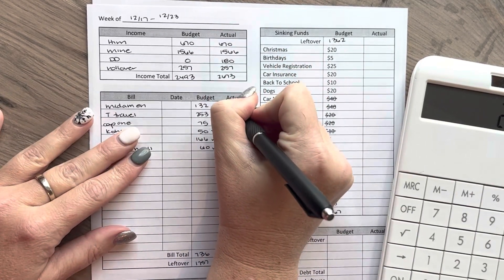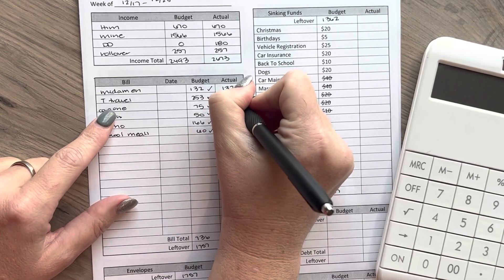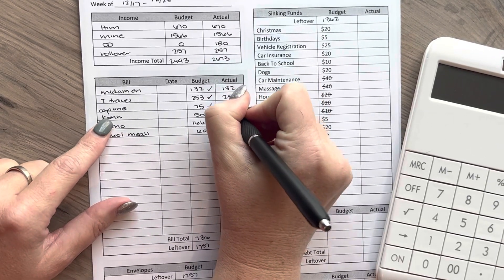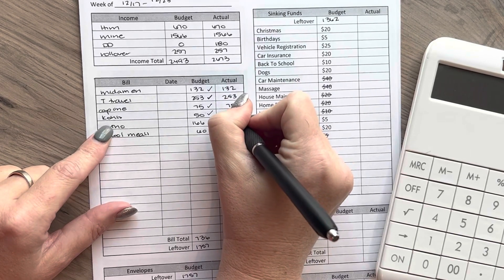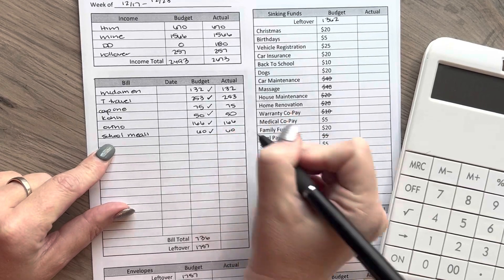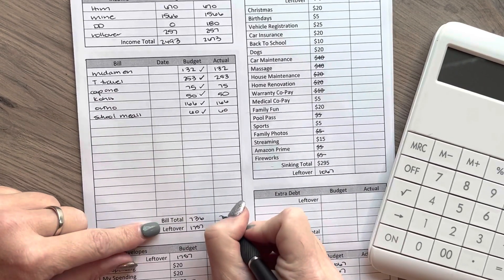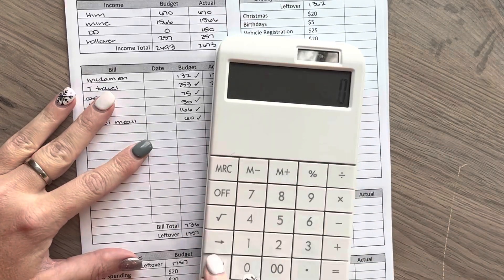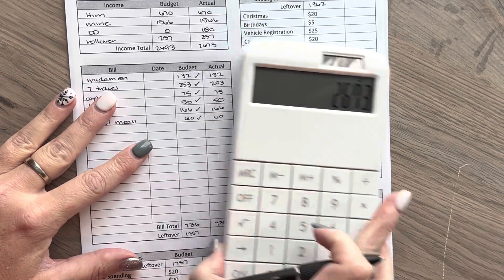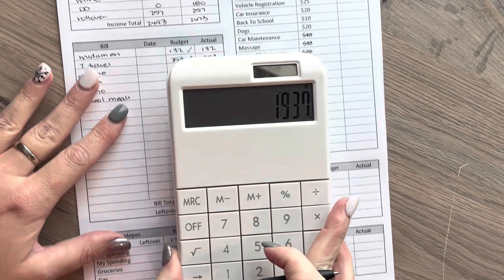And then these were all correct. Our electric bill was $132. The travel payment came out. I paid $75 towards Capital One, $50 to Kohl's. Ortho, I paid $166. And we did pay school meals for $60. And those come out to $736. So we'll take $2673 minus $736, which leaves us with $1,937.